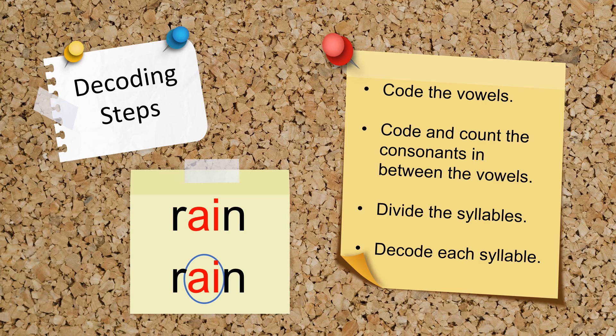Students should use the following process to decode unknown words. First, students should code the vowels. Then, code and count any consonants between the vowels. Next, divide the syllables using syllabication rules. Finally, decode each syllable and blend the syllables together to read the word.